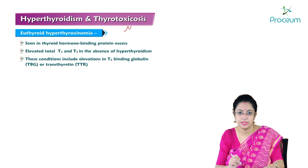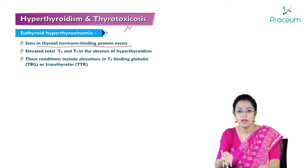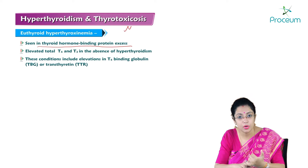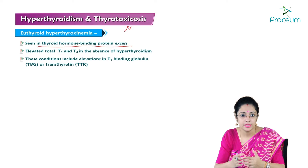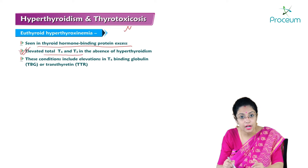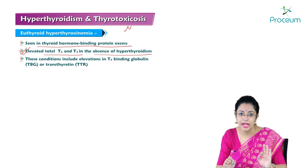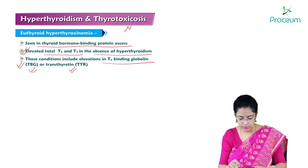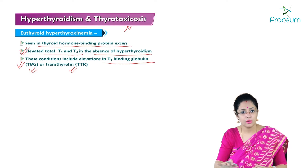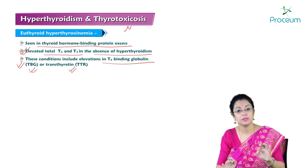Euthyroid hyperthyroxinemia is seen in thyroid hormone binding protein excess. If thyroid hormone binding protein — globulin, transthyretin, or albumin — is elevated, there will be elevation of total T3 and T4 in the absence of true hyperthyroidism. These conditions include elevations in T4-binding globulin or transthyretin, making it appear as hyperthyroxinemia despite normal thyroid function.